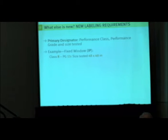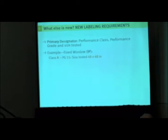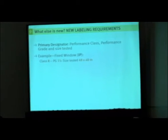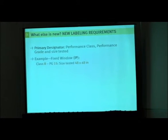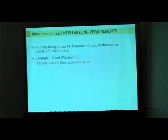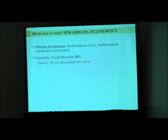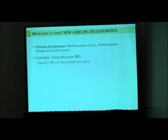This is the minimum information in something called a primary designator. That's all you would see on an American-made window in the States. If you looked at their performance rating label, you would see a class, performance grade, and a size tested — the size that that rating applies to.